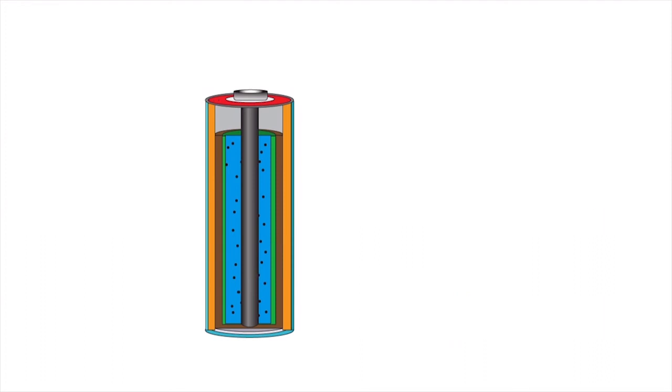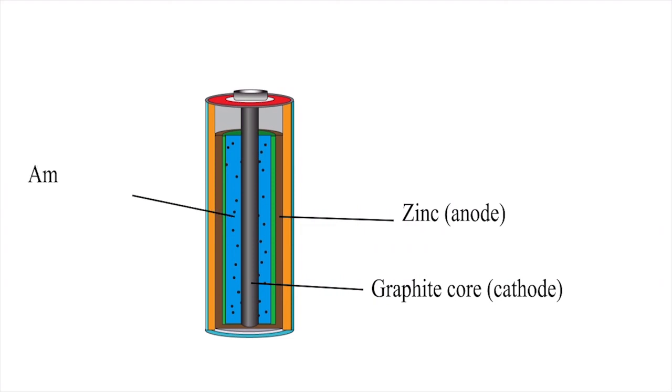A dry cell converts chemical energy in it into electricity. The chemical energy, graphite core is the cathode and zinc is the anode. Ammonium chloride paste then acts as the electrolyte.